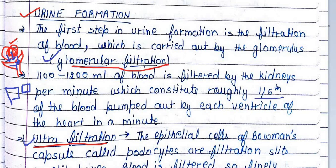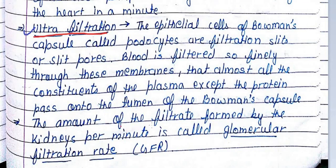An important thing is how much blood is filtered per minute. It is one-fifth of the cardiac output. The amount of filtrate formed by the kidneys per minute is called the Glomerular Filtration Rate, or GFR. In a healthy individual, GFR is approximately 125 ml per minute.